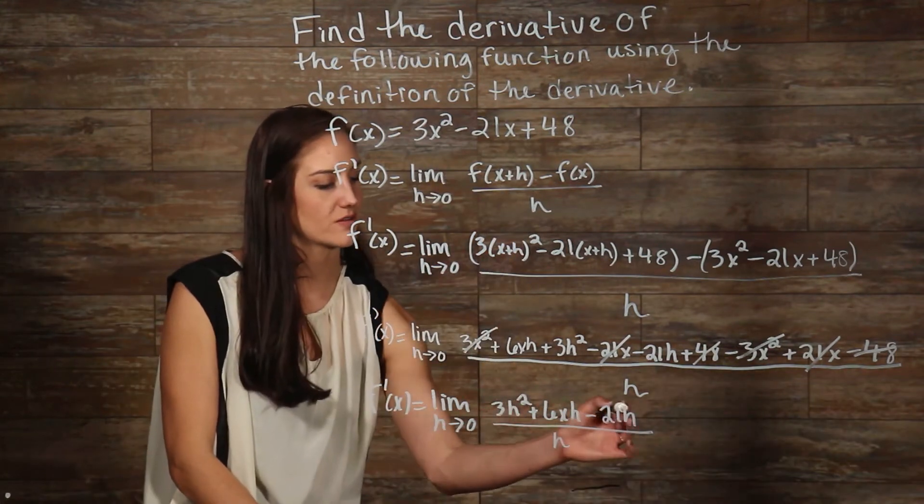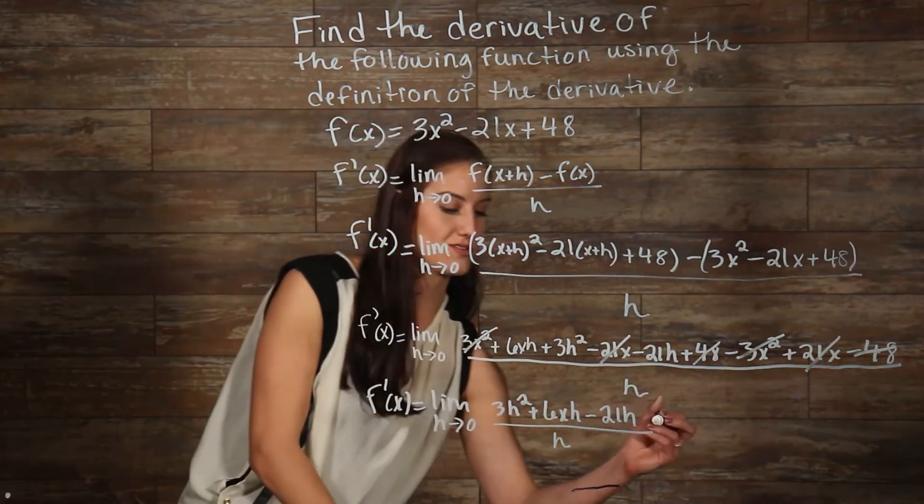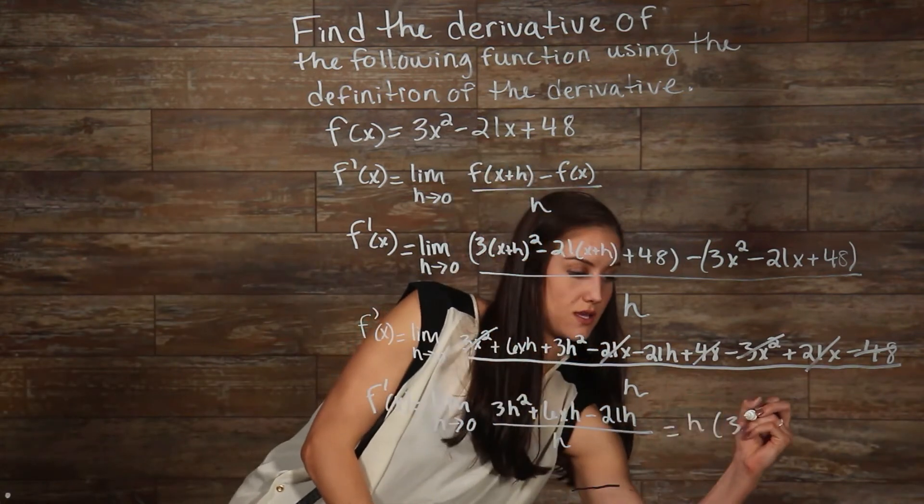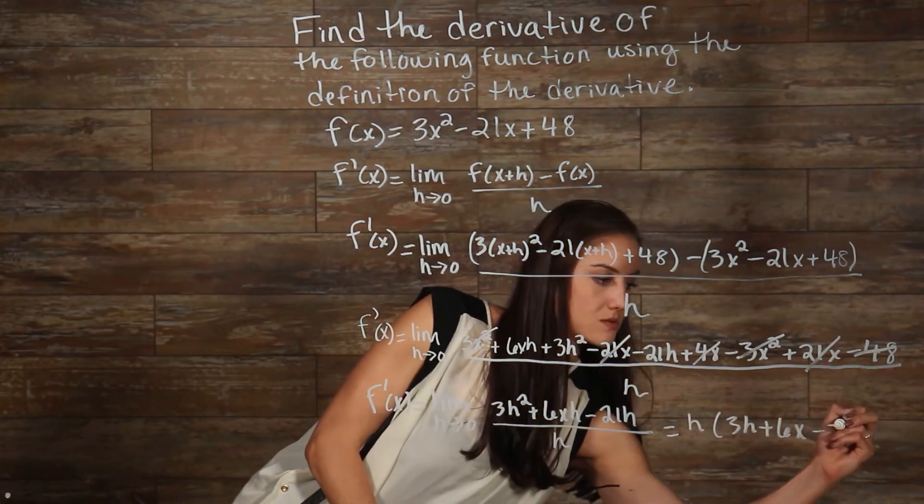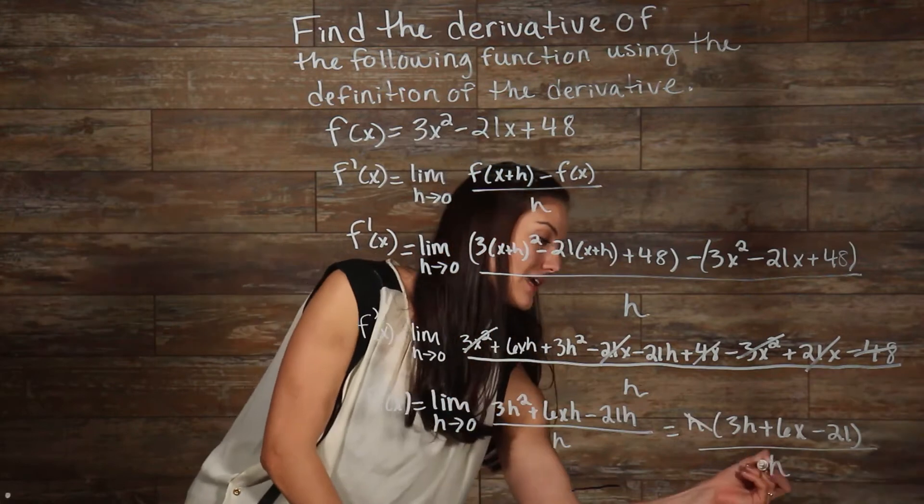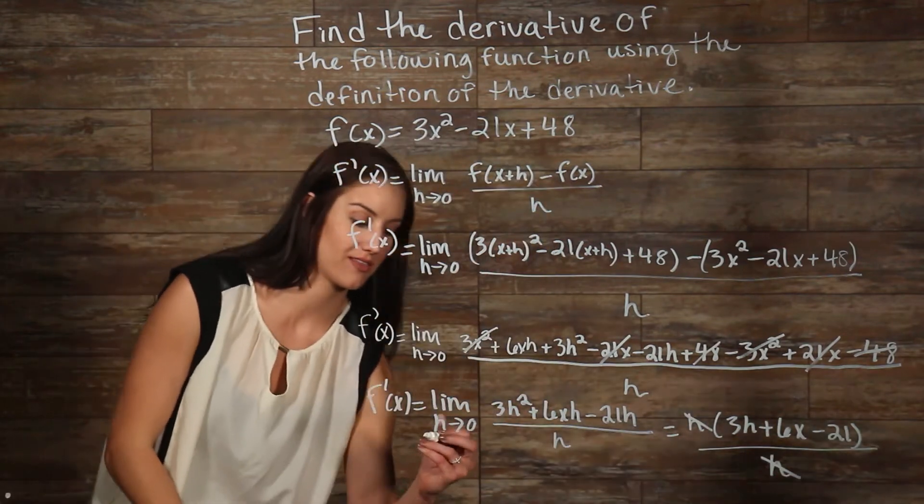Because we have an h in every one of our terms here, we can pull out an h. Now that our h's have canceled out, we're left with the simplified expression.